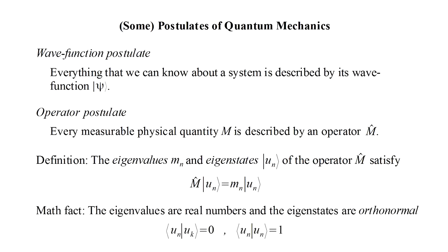An important math fact is that the eigenvalues are real numbers and the eigenstates are orthonormal, meaning that the projection of one state on another is 0 and the projection of a state on itself is 1.